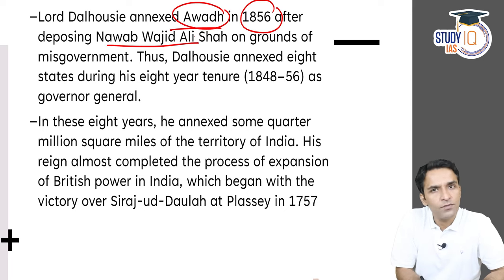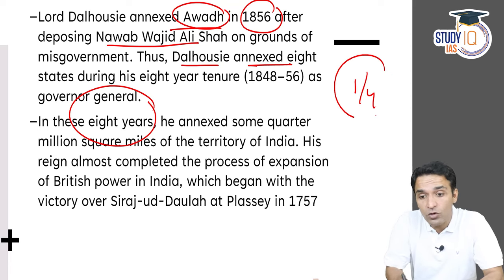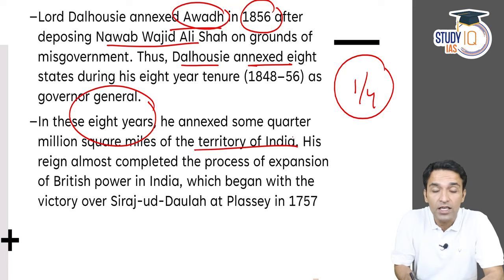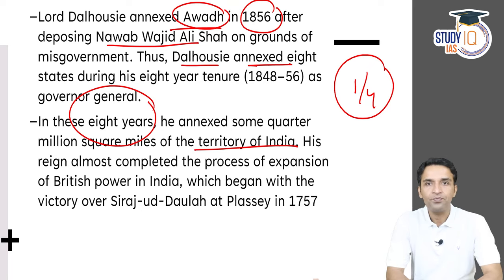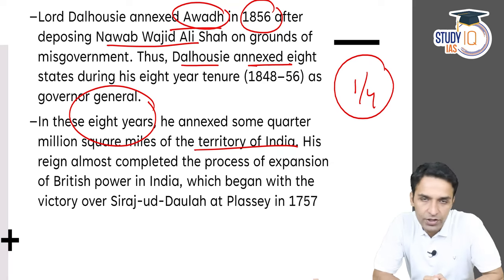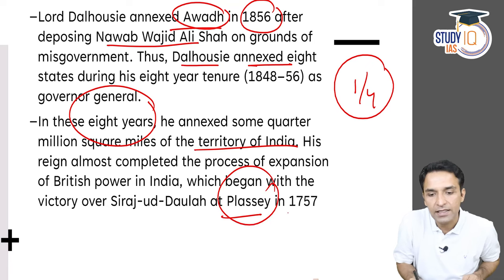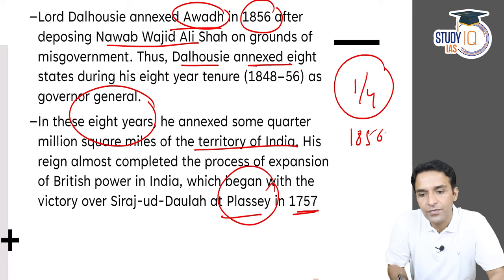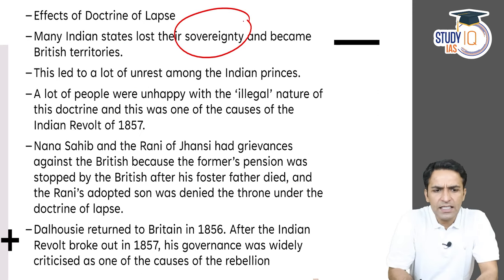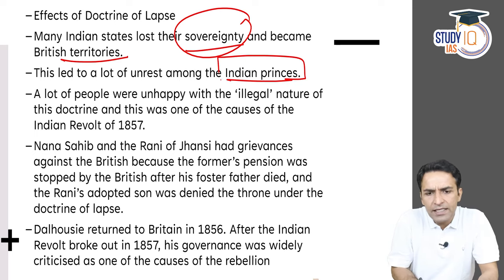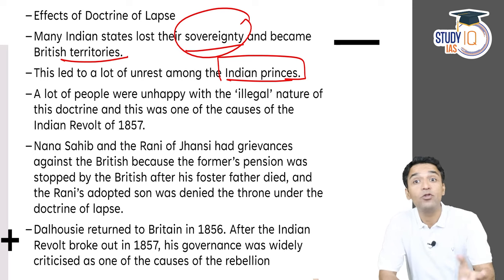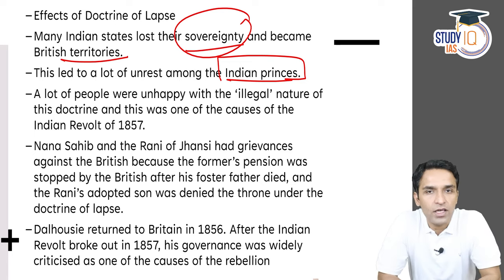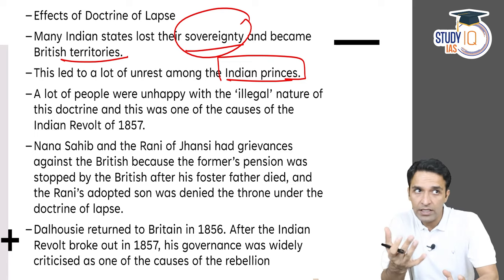Dalhousie was Governor-General for 8 years, and he annexed more than a quarter — one-fourth — of the British territory in the Indian subcontinent. When Dalhousie left his position as Governor-General in 1856, the process that had started with the Battle of Plassey in 1757 was almost complete — the British had full India under their control by approximately 1856. Under the Doctrine of Lapse, states lost their sovereignty and became British territory. Indian princes were unhappy because the adopted prince and his entire family were kind of declared illegitimate.